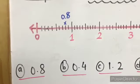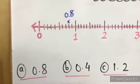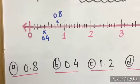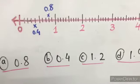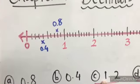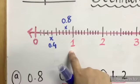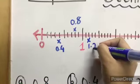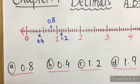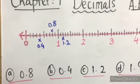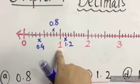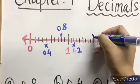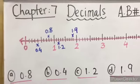The next is 0.4 — start from 0 and count 4 lines, mark X and write 0.4. Next is 1.2 — the whole number is 1, so start from 1 on the number line and count 2 more lines — it will be 1.2. Next is 1.9 — whole number is 1, start from 1 and count 9 lines — mark X and write 1.9.